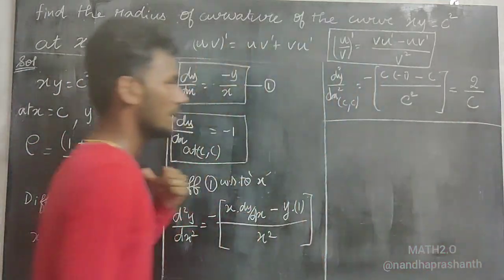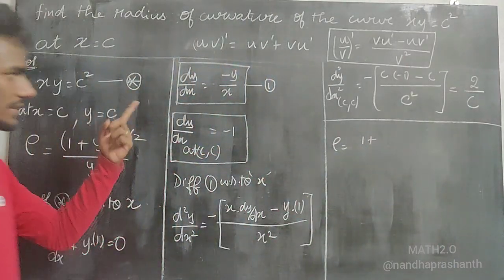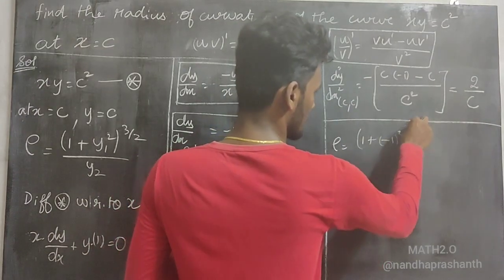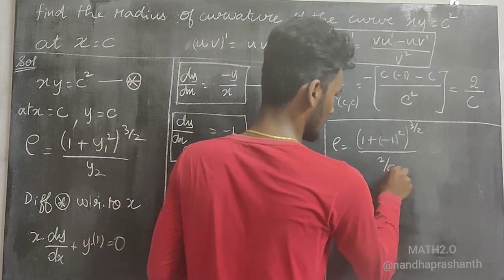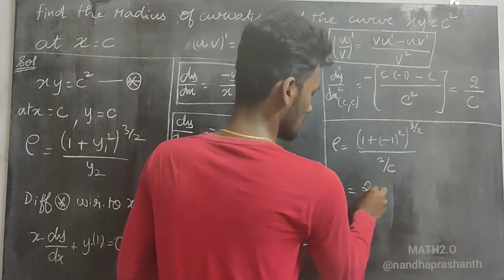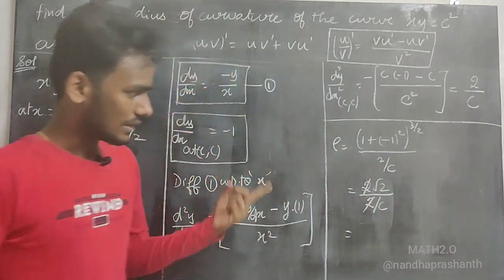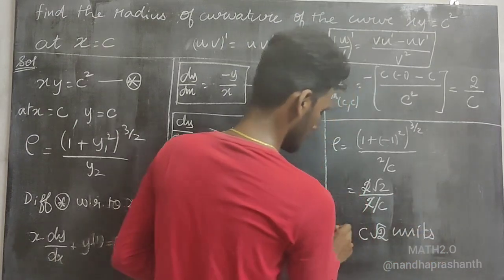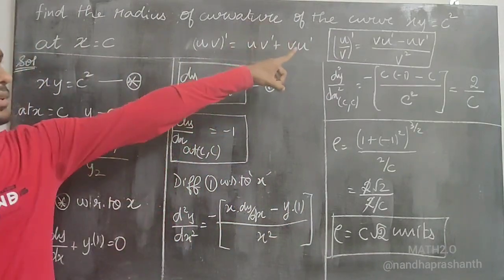Now substitute into the radius of curvature formula. ρ = (1 + (−1)²)^(3/2) / (2/c) = 2^(3/2) / (2/c). Since 2^(3/2) = 2√2, this simplifies to 2√2 · c/2 = c√2. So the radius of curvature is c√2 units.